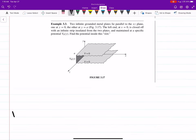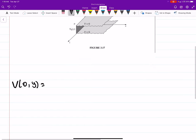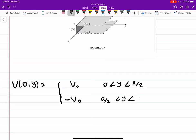So basically what we have is x of 0 at y holds two different values. It's V₀ for y between 0 and a over 2, and negative V₀ for a over 2 to a.